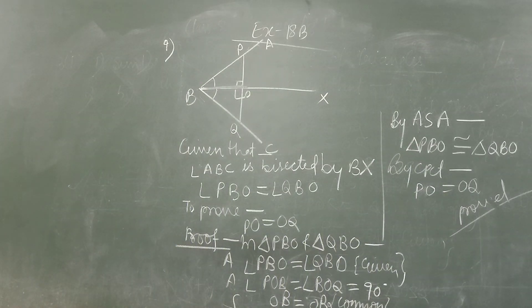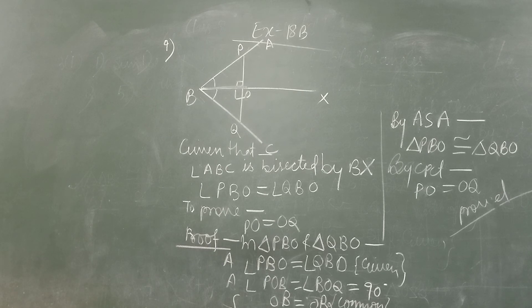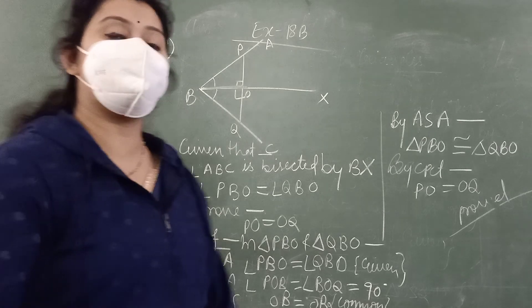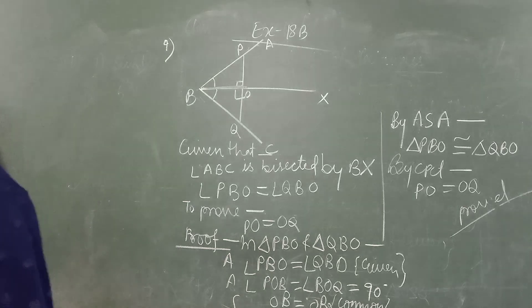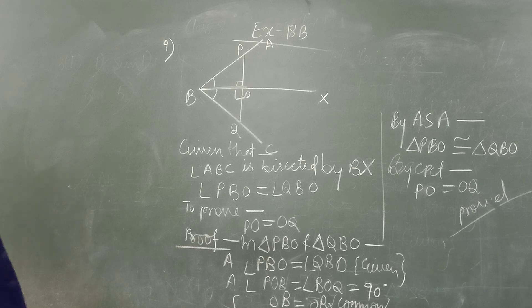Like this, you can solve the other questions. In question number 8, find the size of each angle of an equilateral triangle. Since it is an equilateral triangle, angle B equals angle C, angle C equals angle A, and angle A equals angle B. It means all angles are equal — 60 degrees each. So A plus B plus C equals 60 plus 60 plus 60, which is 180 degrees.